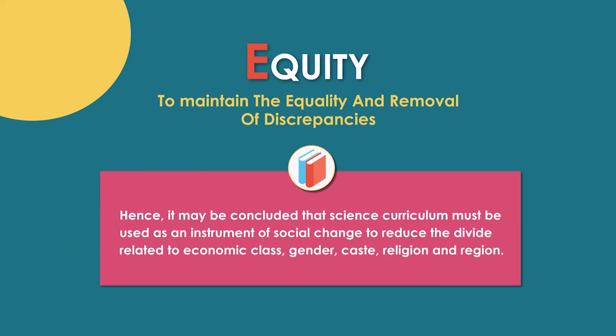Hence, it may be concluded that science curriculum must be used as an instrument of social change to reduce the divide related to economic class, gender, caste, religion, and region. We must use the textbook as one of the primary instruments for equity, since for a great majority of school-going children — as also for their teachers — it is the only accessible and affordable resource for education. We must encourage alternative textbook writing within the broad guidelines of NCF 2005. Information and communication technology is also an important tool for bridging the social divide.